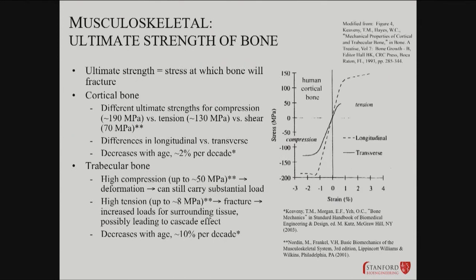That has a complex relationship to strength. The ultimate strength is the stress at which bone will fracture — not just deform, but break. For cortical bone, there are different ultimate strengths depending on the type of stressor applied. Depending on shear versus compression versus tension, you can have different ultimate strengths before fracture.